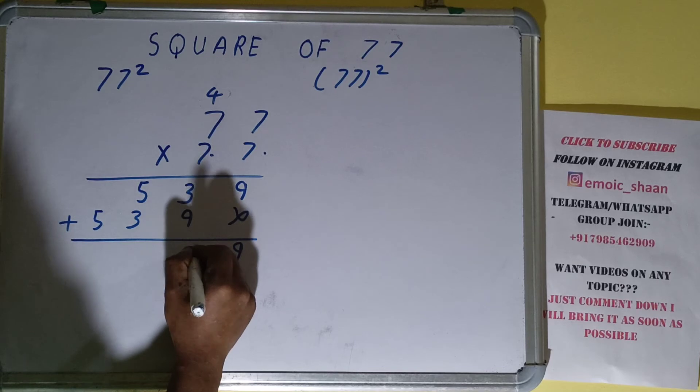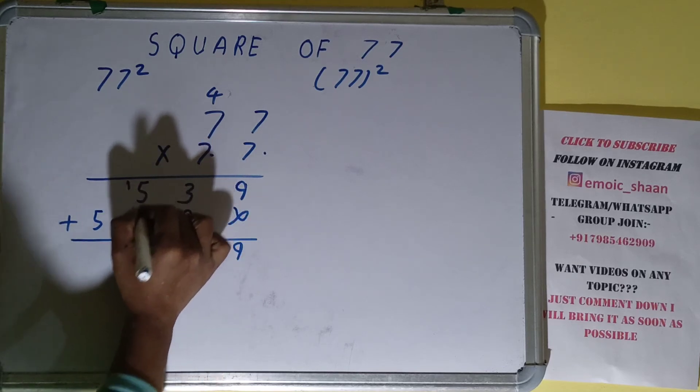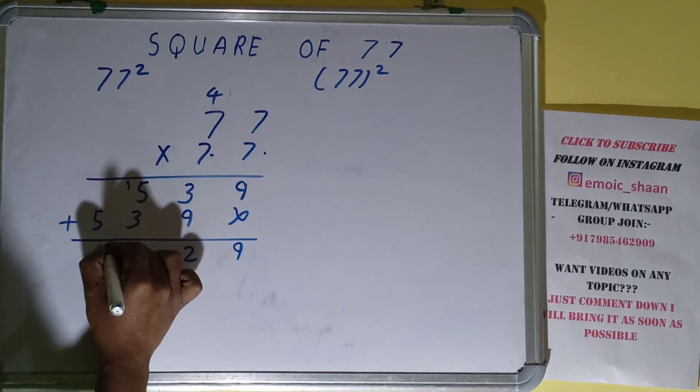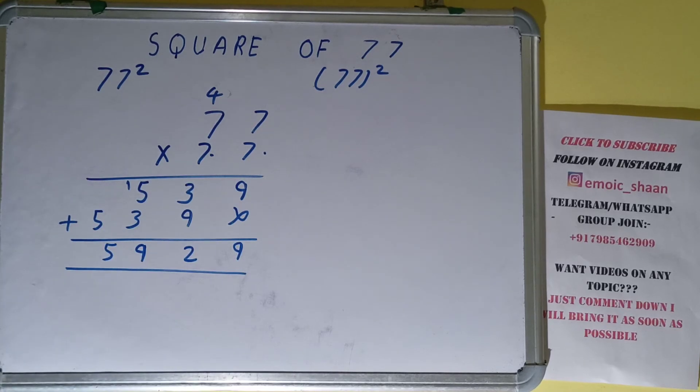9, 9 plus 3 is 12, 1 carry, 2 plus 3 is 5, 5 plus 5 is 9. The answer will be 5929. We can say that square of 77 is 5929.